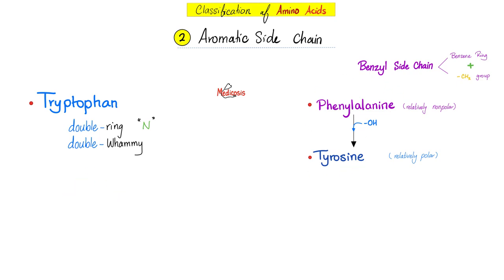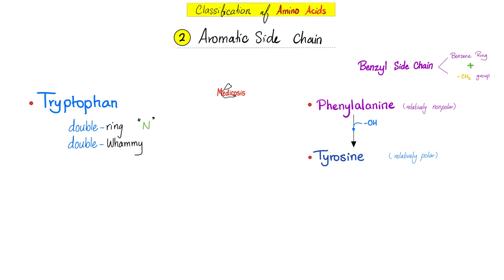Phenylalanine can give you tyrosine — just add an OH. That's why phenylalanine is non-polar, relatively, but tyrosine is relatively polar — because you added OH. These two lovely amino acids have something called a benzyl side chain: benzene ring plus CH2 group.